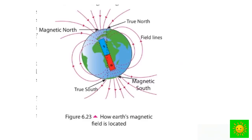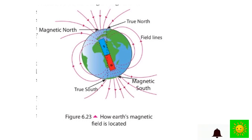This is how the Earth's magnetic field is located. When a compass or a magnet is kept freely near the Earth, its north-south poles are directed along the magnetic field of the Earth. The direction of the north pole of the magnet or compass kept in that manner is known as the magnetic north of the Earth.